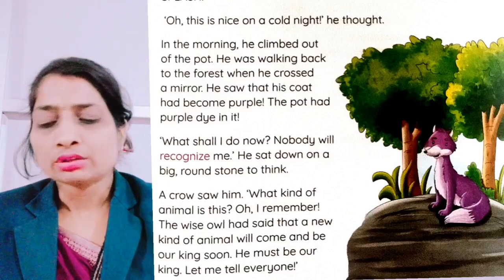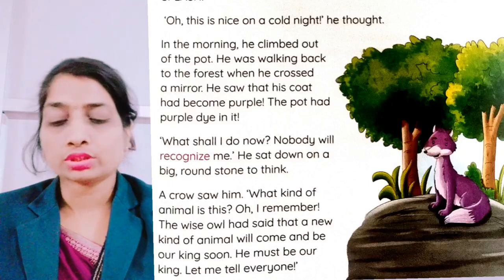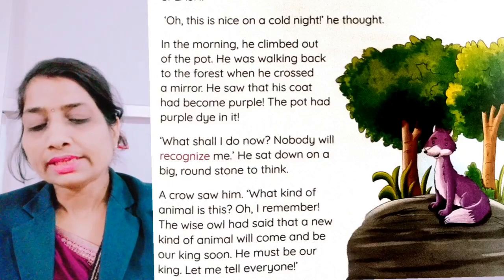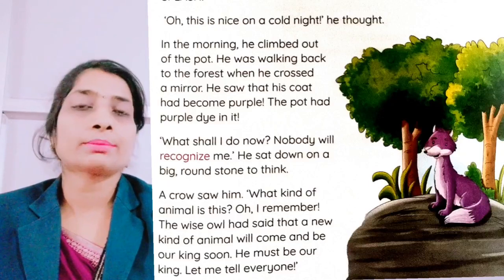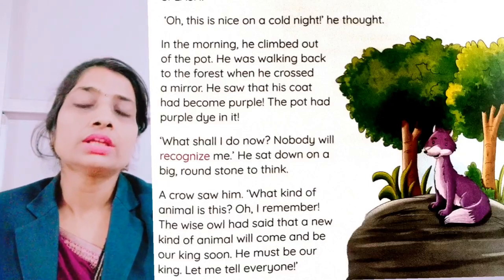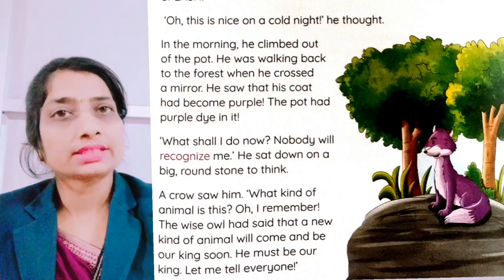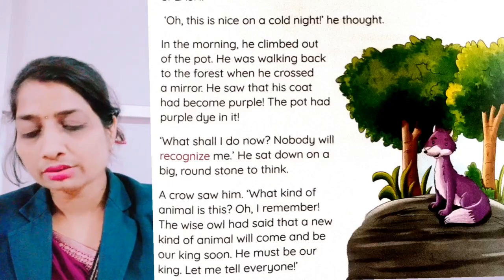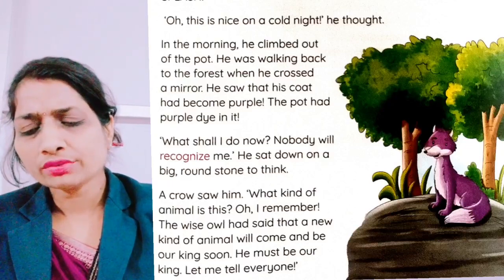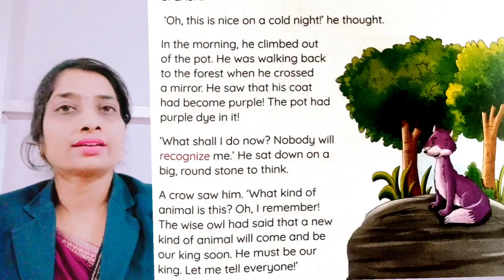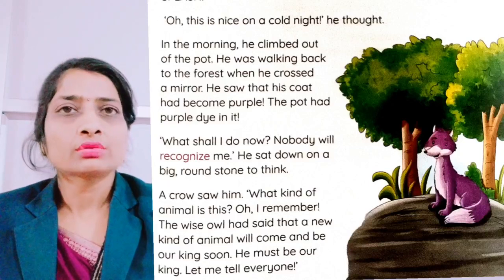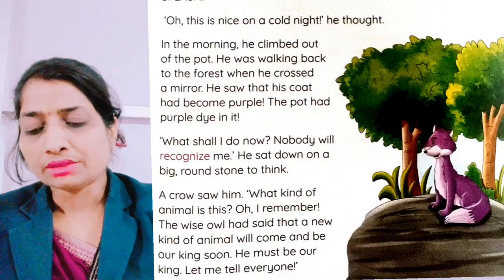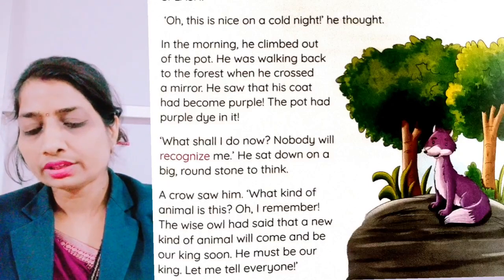He sat down on a big stone to think. A crow saw him and thought, 'What kind of animal is this?' Then the crow remembered: 'The wise owl had said that a new kind of animal will come and be our king soon.'